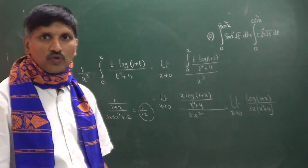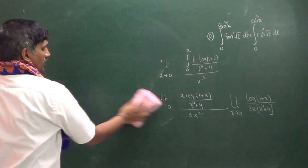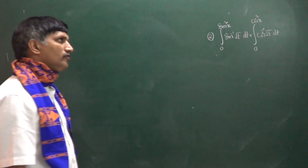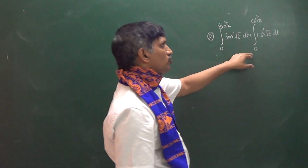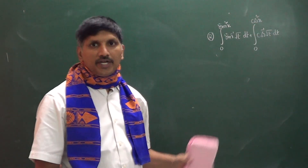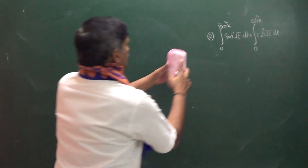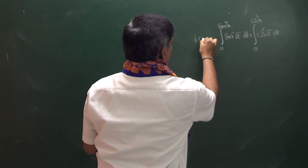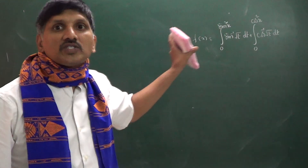The next question is: f(x) equals the integral from 0 to sin²x of sin⁻¹(√t) dt, plus the integral from 0 to cos²x of cos⁻¹(√t) dt. He is asking to find the value of f(x). Let us call this function f(x).